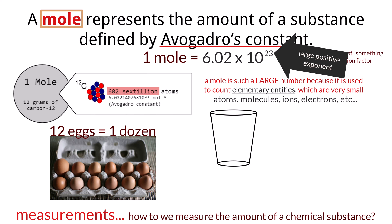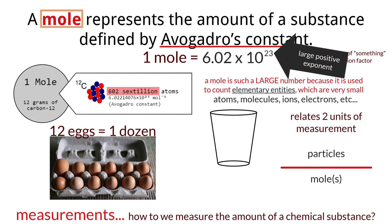Because Avogadro's number relates the two units of measurement — particles and moles — we can use this value as a conversion factor between the two. In this case, we would take the number of particles, 6.02 times 10 to the 23rd, and place it over 1 mole, which can be used as a conversion because dividing this out equals 1.